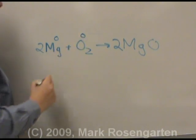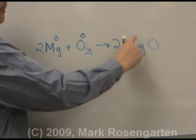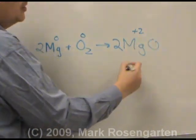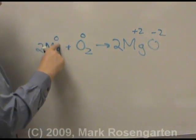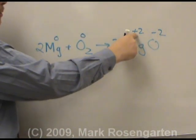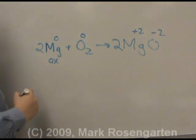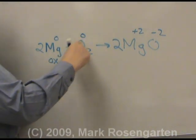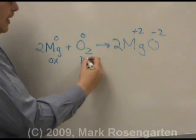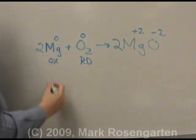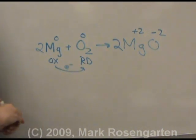Magnesium and oxygen both start off with no charge because they're not in a compound. The magnesium becomes plus two charge, and oxide becomes minus two. Because magnesium increased its charge to a more positive value, it underwent oxidation. Because the oxygen became more negative in charge by picking up electrons, it underwent reduction. Electrons went from the magnesium to the oxygen.